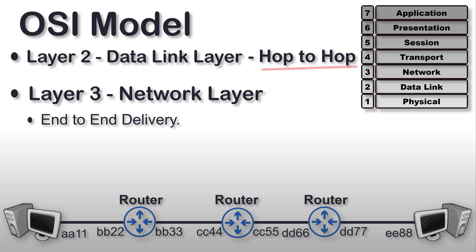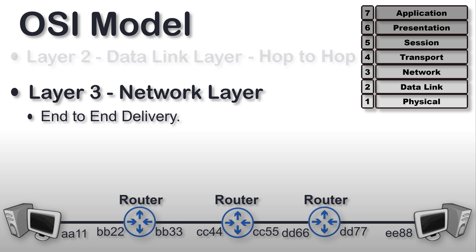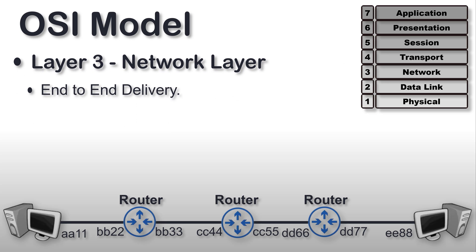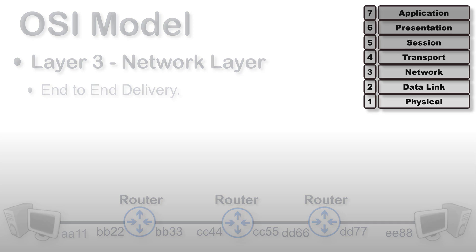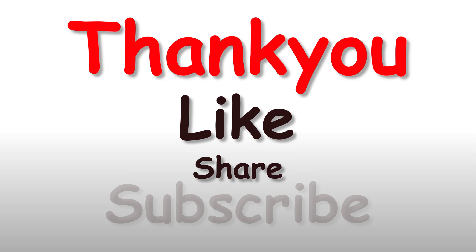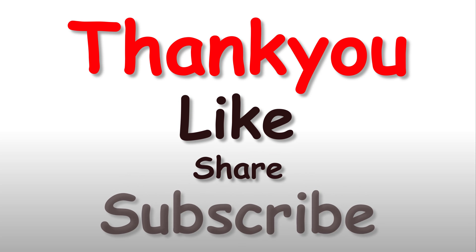That's it for the second layer of the OSI model, the data link layer. In the next video we will discuss the third layer of the OSI model, which is the network layer. Thank you for watching, and please don't forget to like, share, and subscribe to the channel. Thank you.